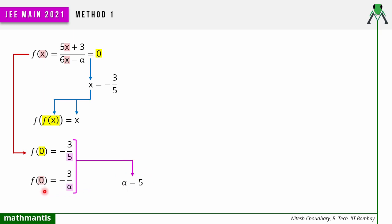Notice that we did not even need to fully expand f(f(x)). If you define f(f(x)) directly, you replace x with f(x) inside the expression, and that creates a very lengthy expression. So this is the easier way — we only needed to find α, not define f(f(x)) explicitly. The direct substitution approach is a lengthier third method.